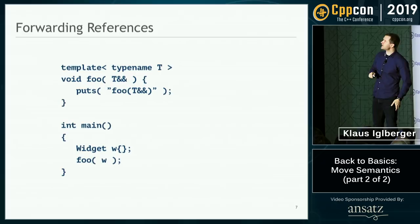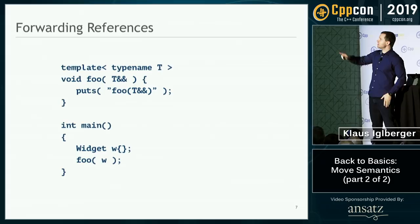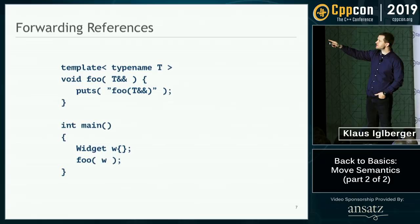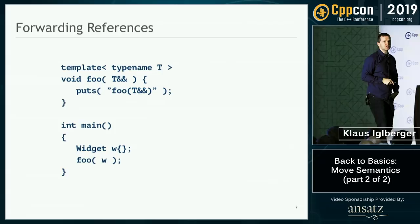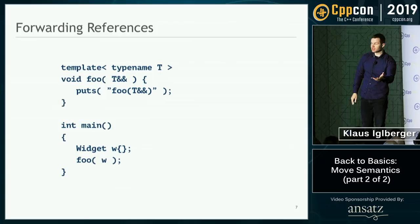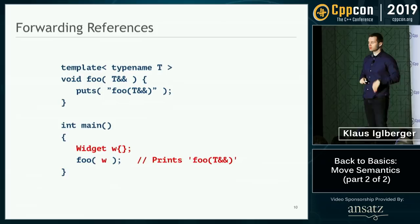Let me show you why forwarding references behave differently. Say I have a function template called foo that takes a T&& argument — one of the forms I showed before. To prove something happens I've added some output. In main I have a widget — an l-value with a name — and I pass it to foo. This should not compile, because an l-value should not bind to an r-value reference. That would be bad — we'd move from an l-value that can still be used. But it does compile, and it prints the signature.